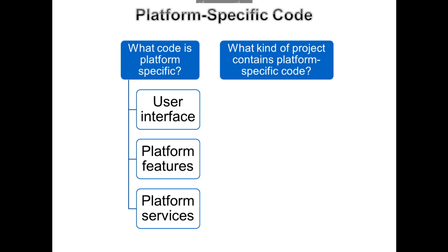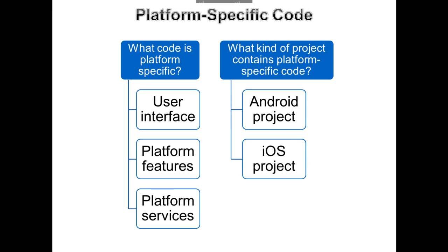When writing platform-specific code, for your Android code you're going to create an Android project, and for your iOS code an iOS project. Xamarin Studio and Visual Studio, once you install Xamarin, have Android and iOS project types. So when you build your cross-platform applications, you're generally going to have three projects: the shared code project, one project for Android code, and one project for iOS code. Also worth noting: although Xamarin itself does not support Windows Phone, because you can use Visual Studio and it uses .NET, you can still share your code with Windows Phone, iOS, and Android.